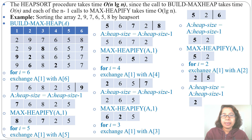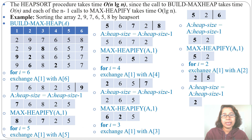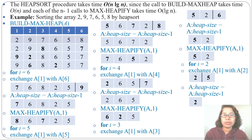HeapSort is an in-place algorithm since we operate within the same array and don't need any extra space — just like QuickSort. MergeSort is not an in-place algorithm. HeapSort's running time is O(n log n) for best, average, and worst case, whereas QuickSort's worst case is O(n²). With this I am finishing HeapSort. If this lecture is helpful please like and subscribe.